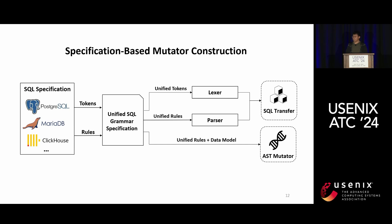WinFuzz addresses obstacle one by automatically deriving a custom mutator from the DBMS grammar specification. The SQL mutator comprises two components: a SQL parser and an AST mutator. The SQL parser converts a SQL query into an abstract syntax tree (AST), and the AST mutator alters the structure or data elements of the original AST to generate a new one. We extract tokens and SQL grammar rules from the grammar file, translate them into a unified grammar specification, and generate a lexer and parser. For each grammar rule, we identify data-related elements and add specific mutation rules for each data element.